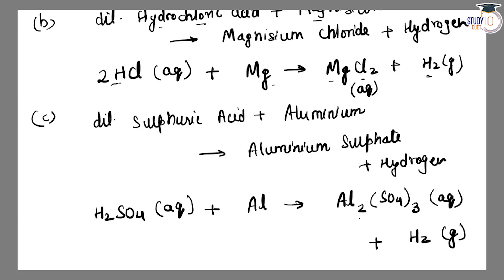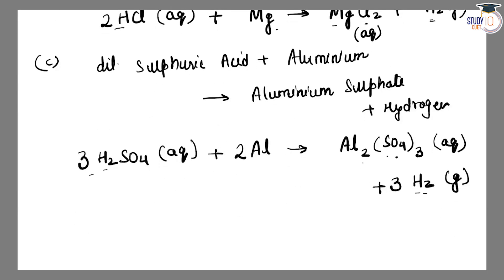Aluminum: 2 on left, 2 on right. Sulfate: 3 on each side. Hydrogen: total 6 here, so place 3 in front of H₂. Equation is balanced.